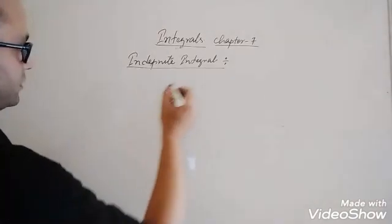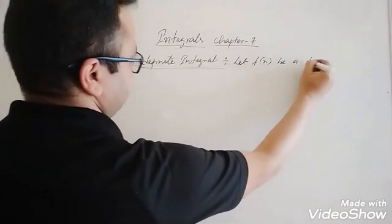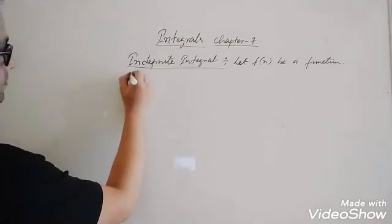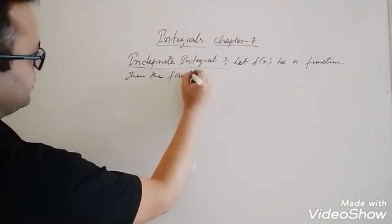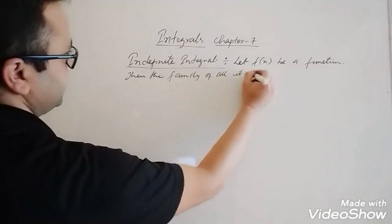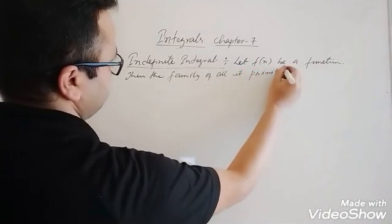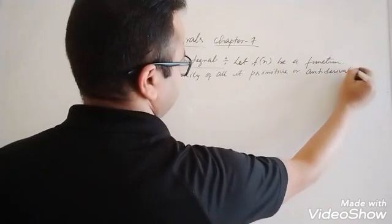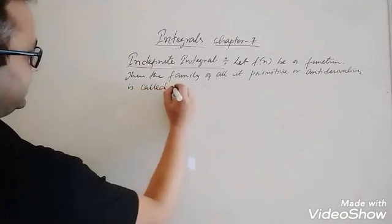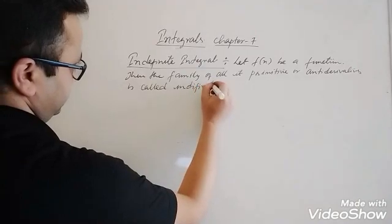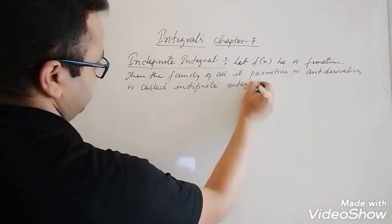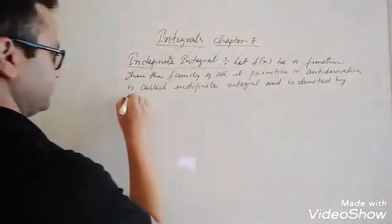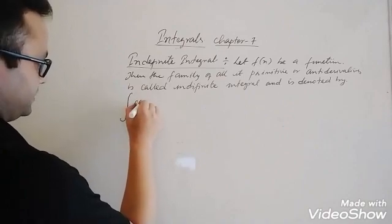Now consider a function — let f(x) be a function. Then the family of all its primitives, or anti-derivatives, is called the indefinite integral, and is denoted by the integration symbol: ∫f(x)dx.